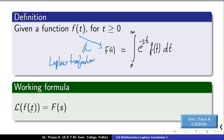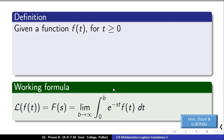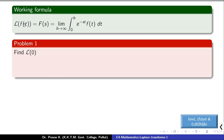Even though this is the formula to find the Laplace transform of f(t), we have a working formula: the limit as b tends to infinity of the integral from 0 to b of e raised to minus st times f(t) dt, where infinity is replaced with a variable b and the limit is taken after integration.